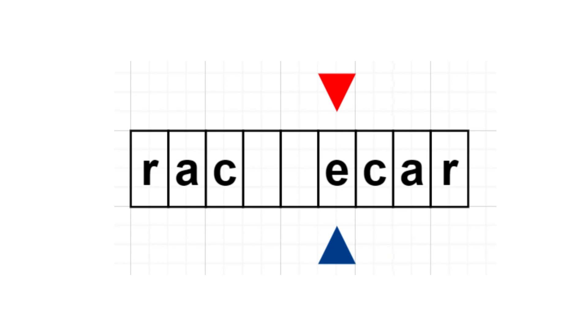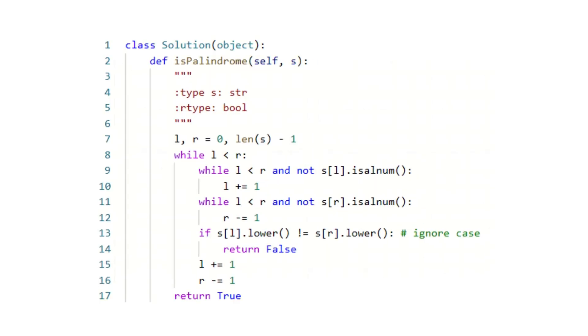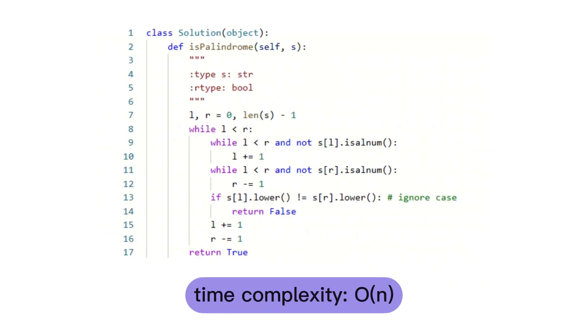After the while loop, we know that the string must be a palindrome. And here is a complete code for this question. The time complexity is O(n), since we only look at each character at most once.